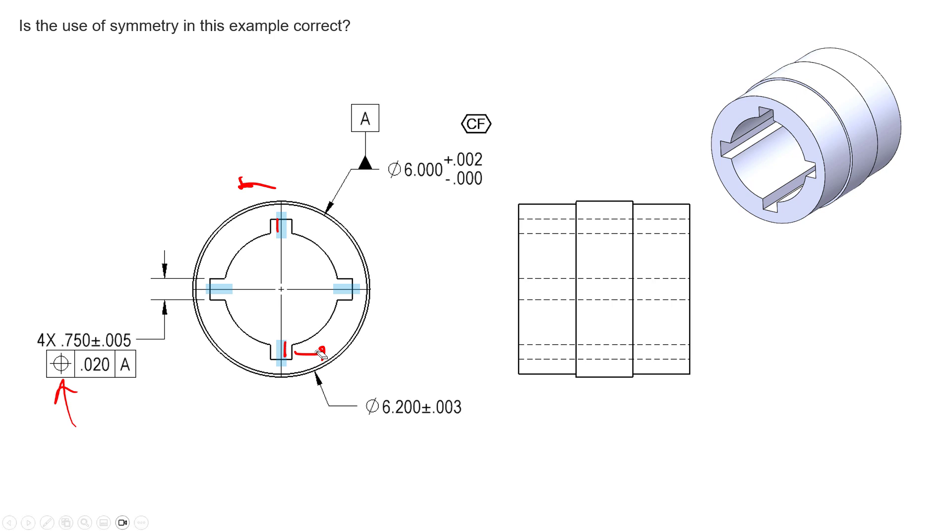And the maximum amount of coplanarity error, or the symmetry error if you want to picture it that way, is going to be no more than 20 thousandths. This one can go 10 thou that way, and this one can go 10 thou this way, and they will all be centered on the datum axis.